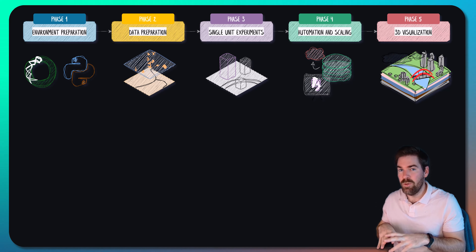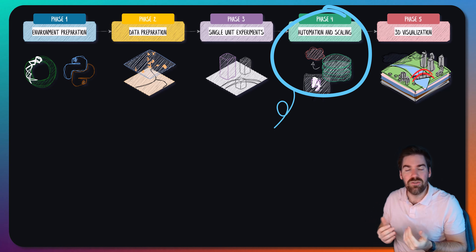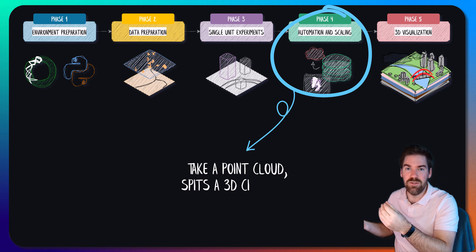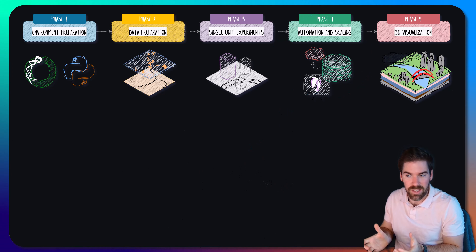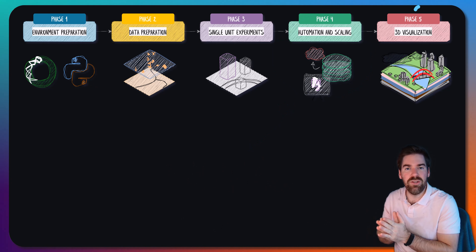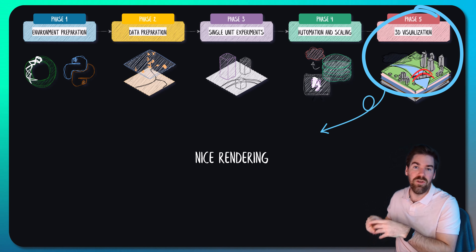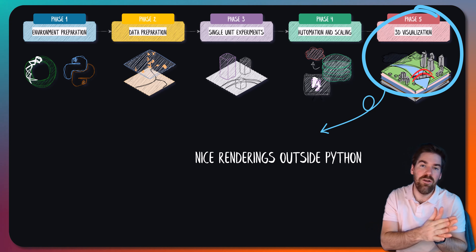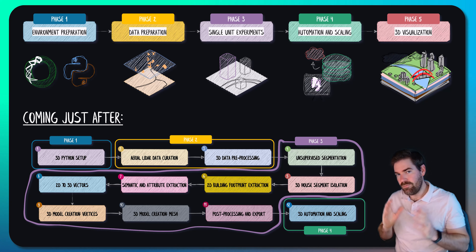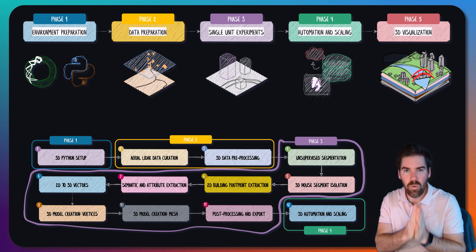After that, we'll re-engineer the code to automate and scale, so that you drag and drop your point cloud and get the 3D modeling of the area you are considering. And of course, at the end, we'll go into visualization and analysis. There are also experiments on rasterization — vector from raster data — but that is in the article you can find linked below. If you're ready, we can get started right away.